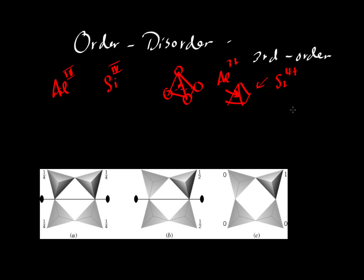There are some charge-balancing issues that must be taken care of when substituting aluminum for silicon or vice versa — we have a video on coupled substitutions in our solid solution YouTube video where we look at the feldspars. Here we're going to ignore the charge balance; that's taken care of off-screen. We're just going to look at the tetrahedra themselves, and let's say we have four of them.